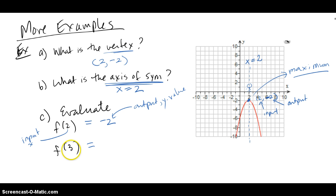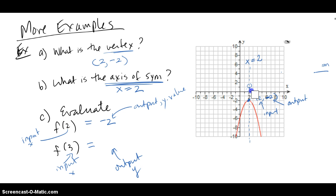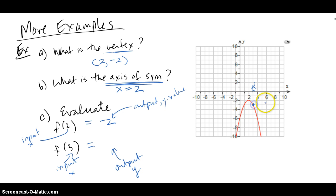Let's do the same thing for input x equals 3 and see what the output or the y value may be. We need to clean up the graph so we can see better. So let's go to the x coordinate of 3, which is right here, and when I stand at x equals 3 I go down to the graph, and it goes through the ordered pair 3, negative 3. So if the input is 3, the output y is negative 3.